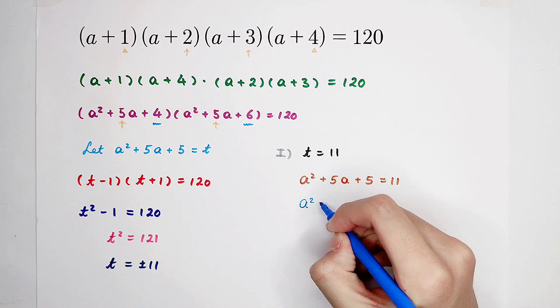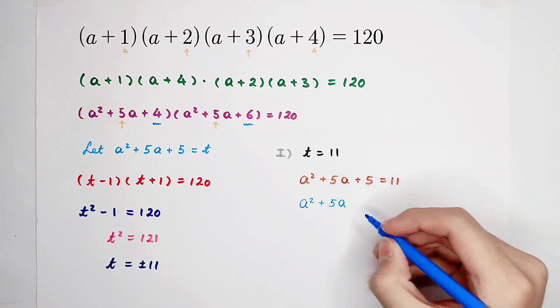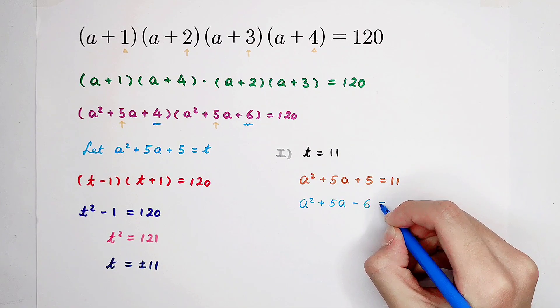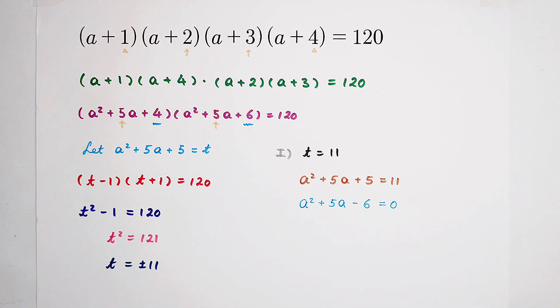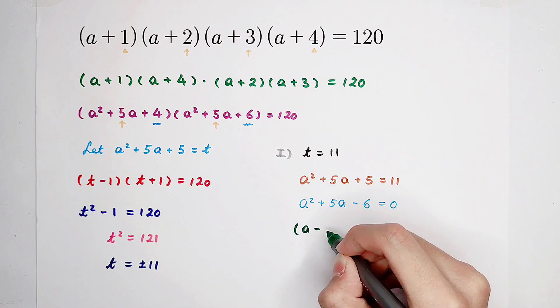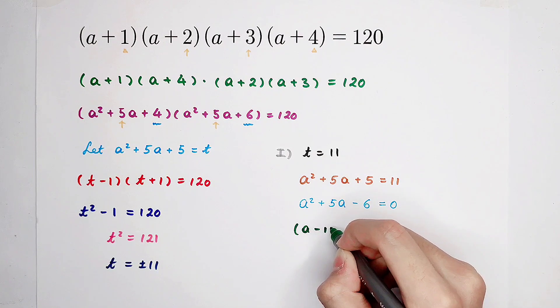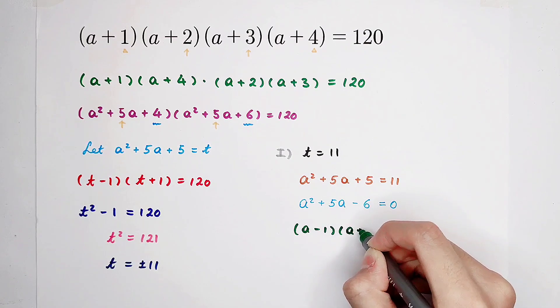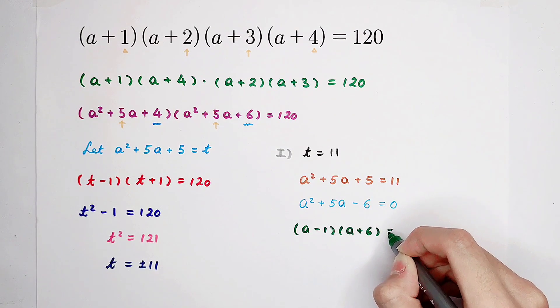a squared plus 5a plus 5 minus 11 is minus 6 equals 0. So now, factorization. It is a minus 1 times a plus 6 equals 0.